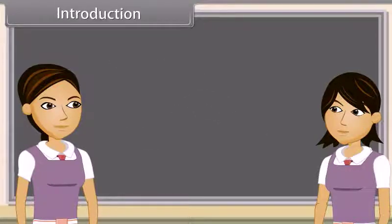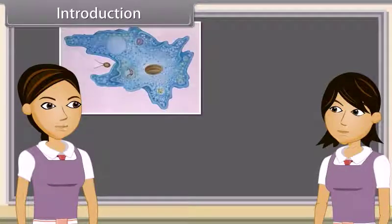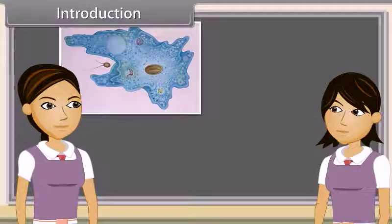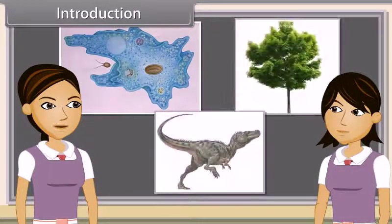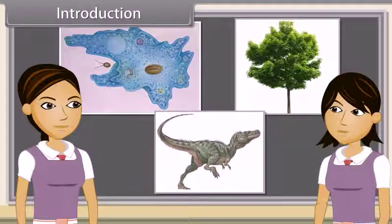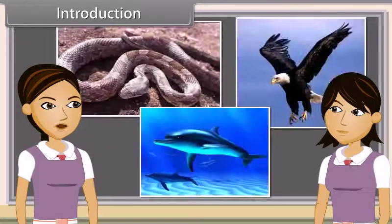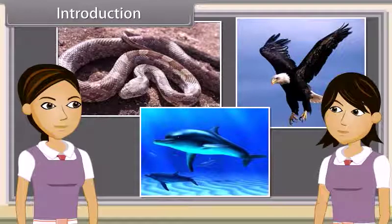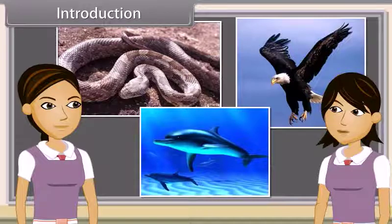Introduction. Can you name this organism? Yeah, this is amoeba. Name these organisms as well. The first one is a tree and the second a dinosaur. Identify these creatures. Snake, eagle and dolphins.